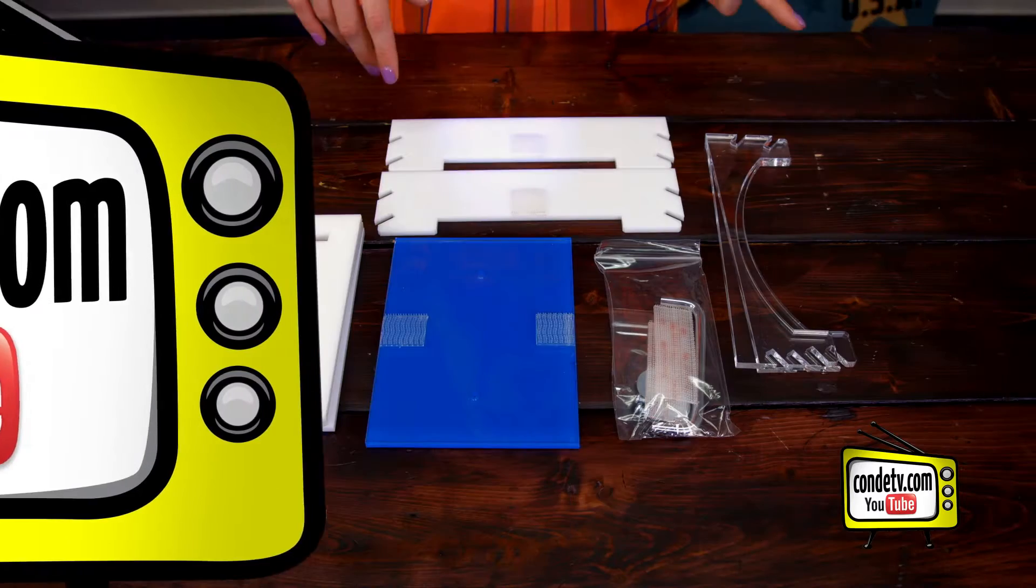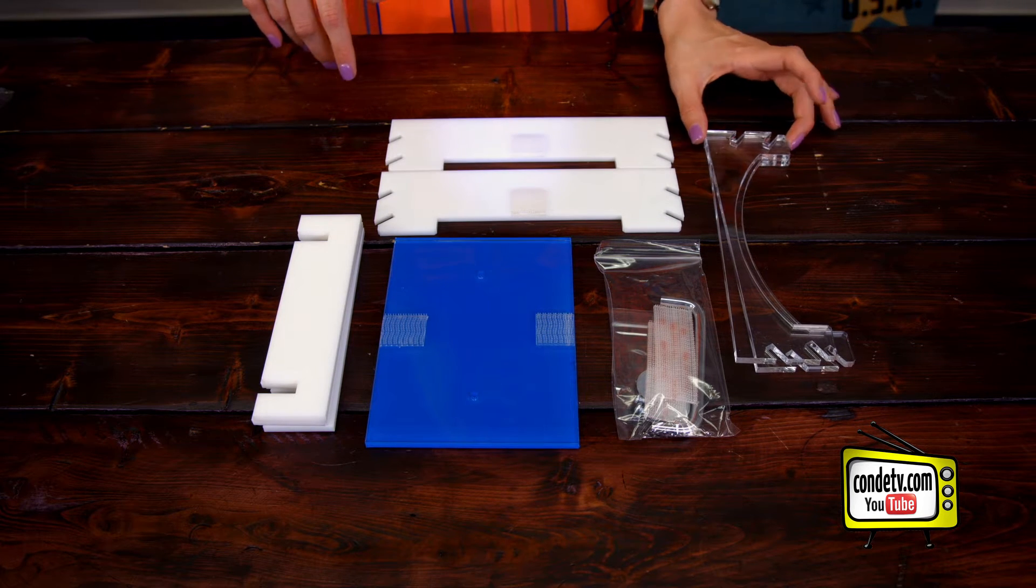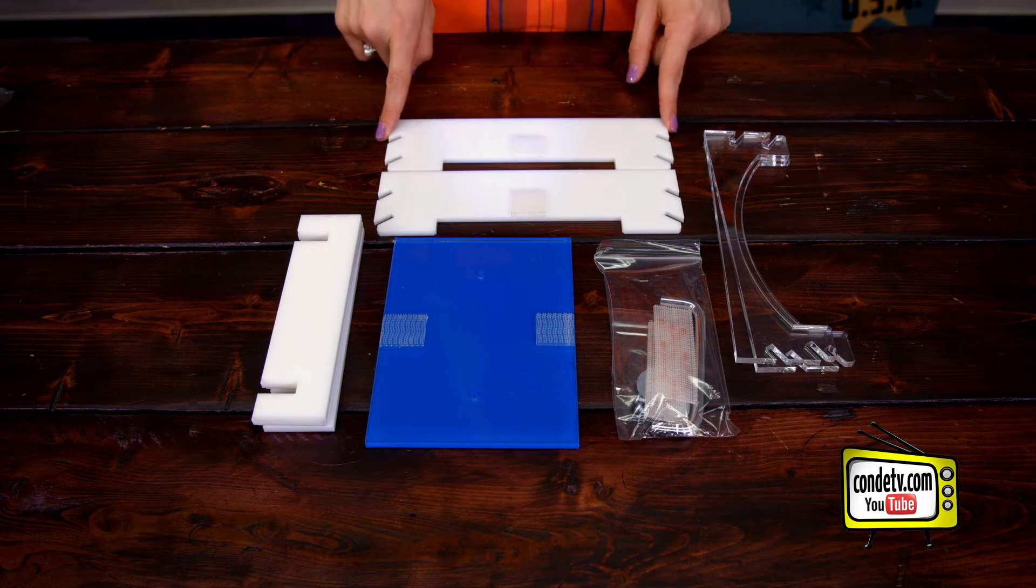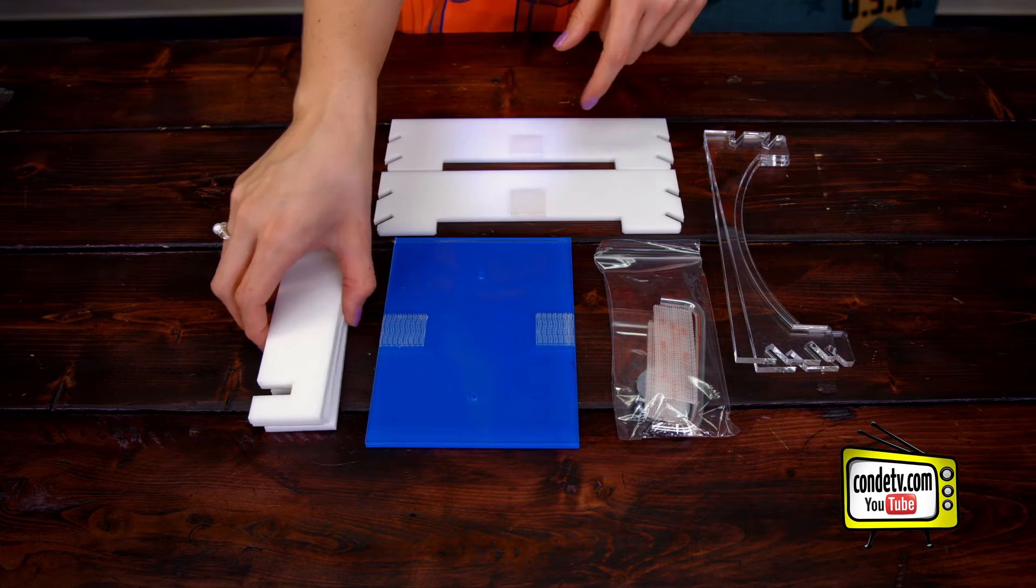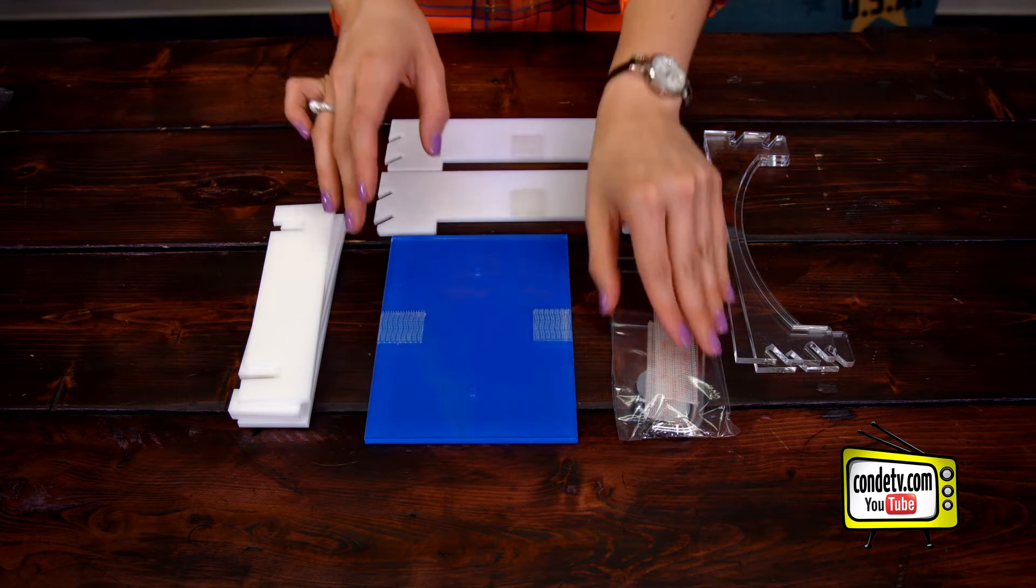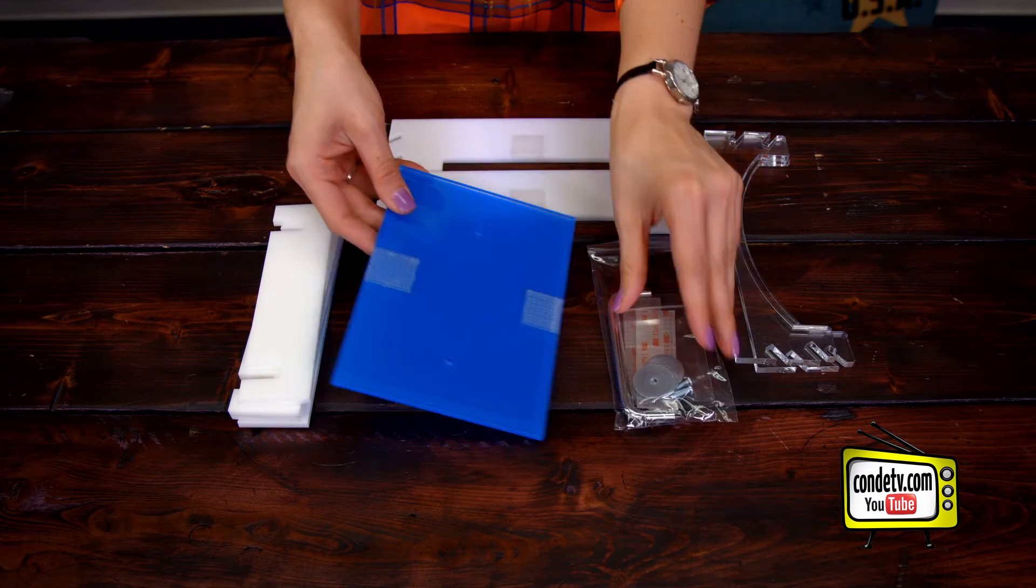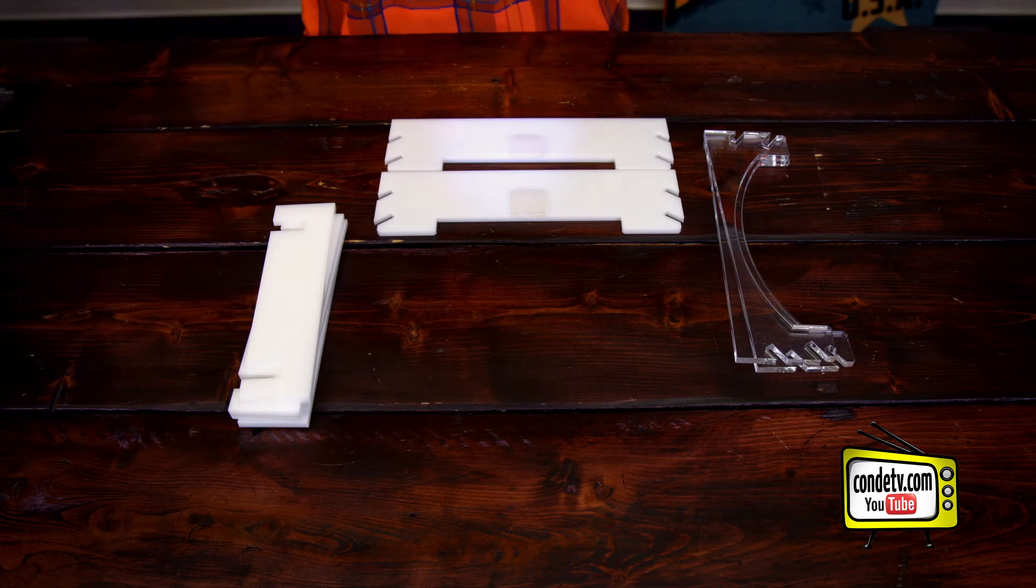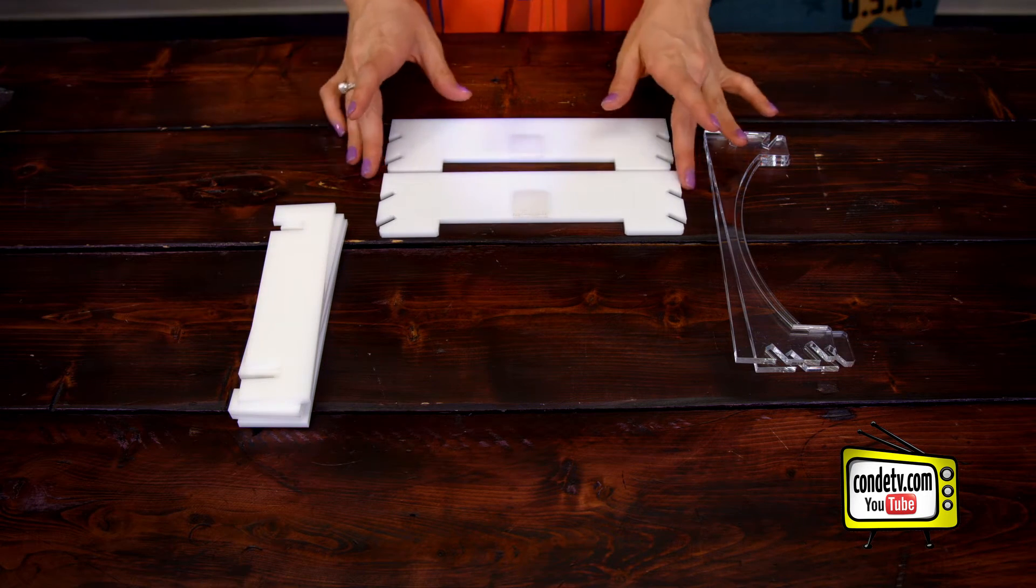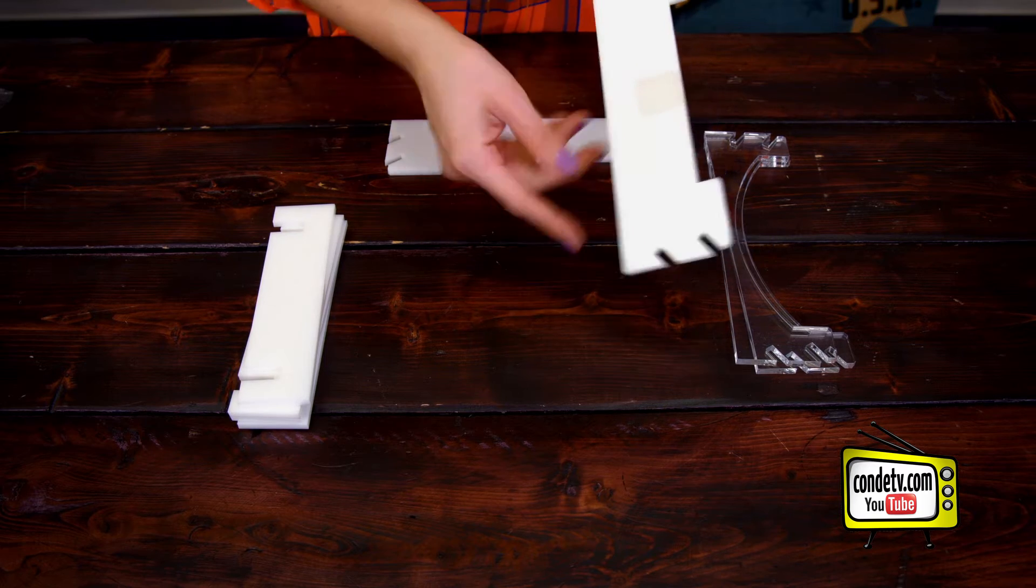So the kit actually comes with two clear curved side pieces, two straight white side pieces, four end pieces, a lid, and then all of the hardware that comes with the lid. And we're going to actually discard the lid for now so that we can assemble the side pieces.